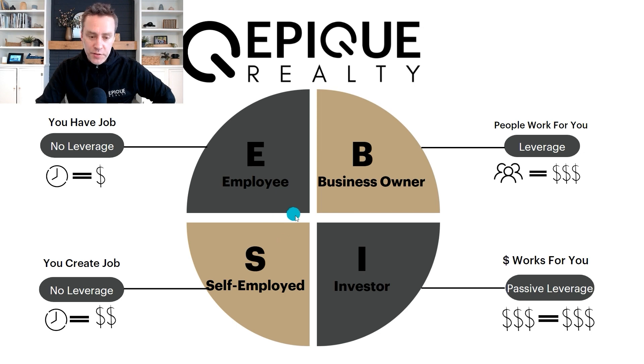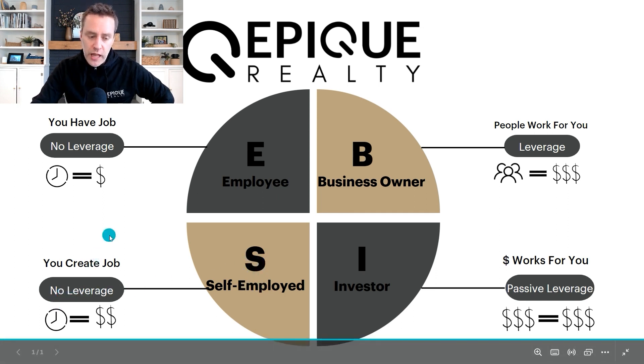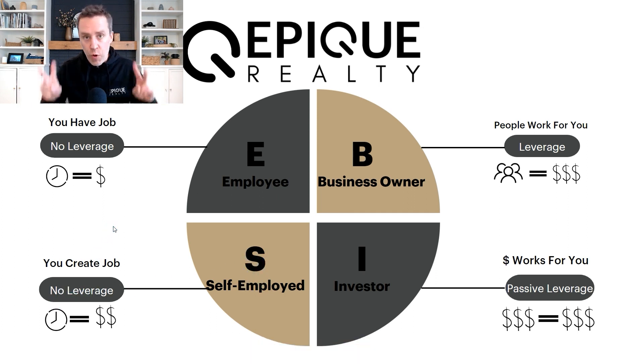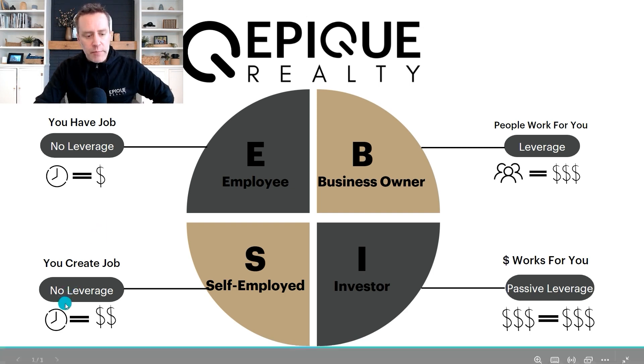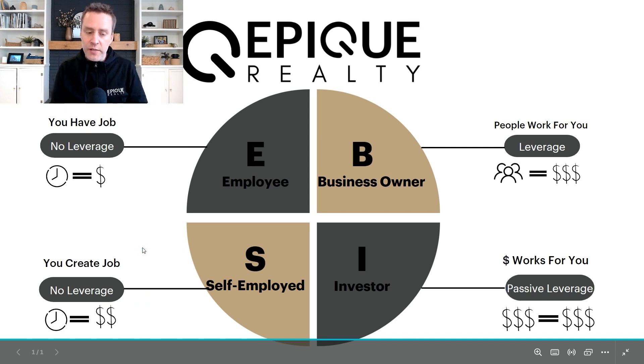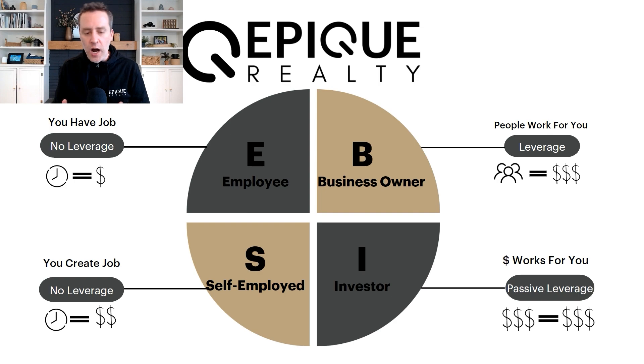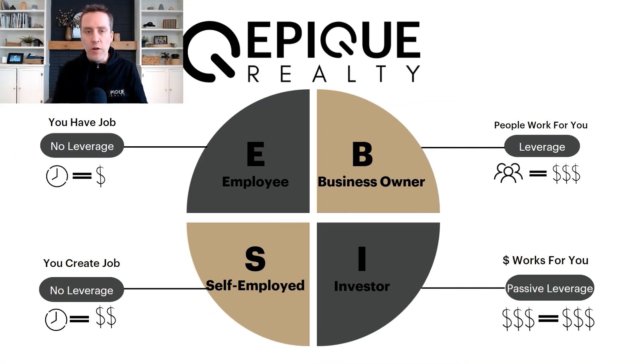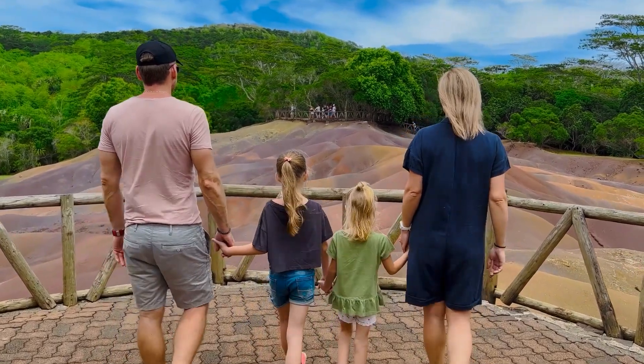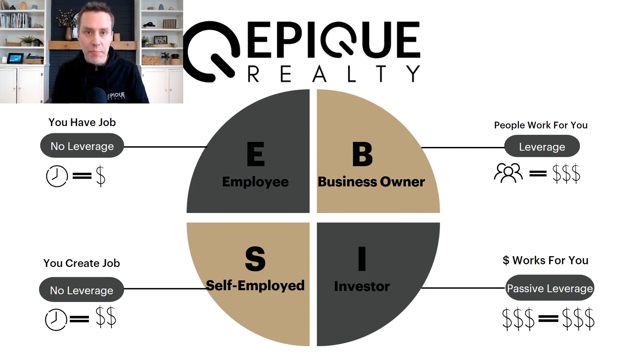This is where most of us in the real estate industry fall — in the Self-Employed category, where you still have no leverage. We're on the quote-unquote 'transaction treadmill,' trading time for money. About 90 to 95 percent of real estate agents live in this Self-Employed category. There's nothing wrong with that — we sell houses, we love what we do. But if you're sick for two or three weeks, or want to go on vacation for six weeks, what happens to your income?